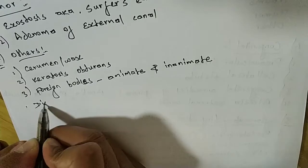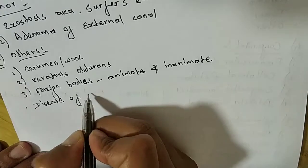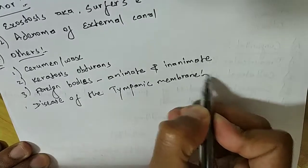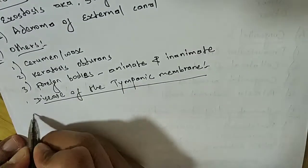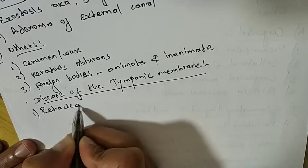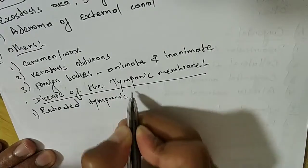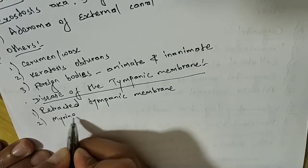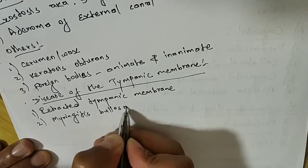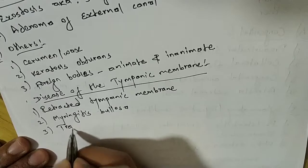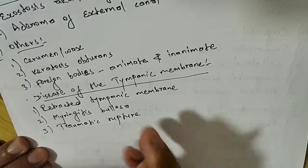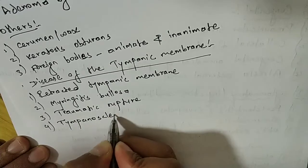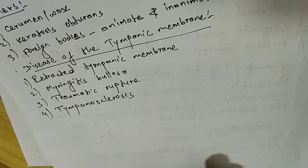Now let's learn about the diseases of the tympanic membrane, which also comes under the external ear. Under diseases of the tympanic membrane comes: retracted tympanic membrane; myringitis bullosa; traumatic rupture; and tympanosclerosis. So these were all the diseases of the external ear.